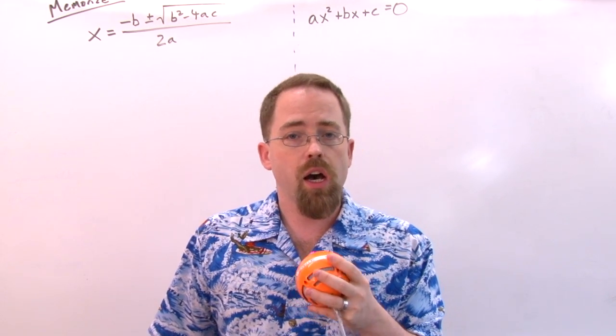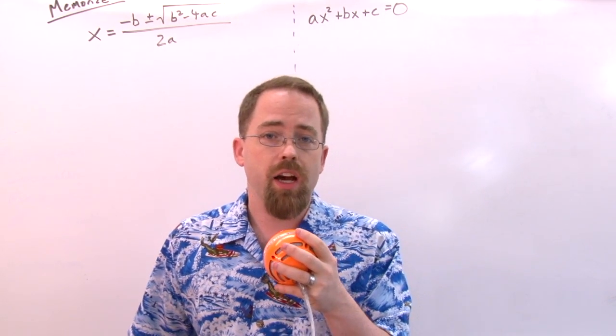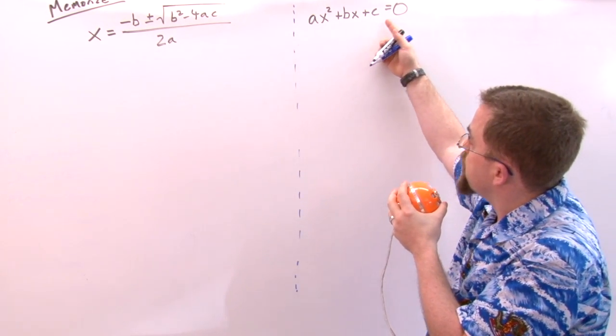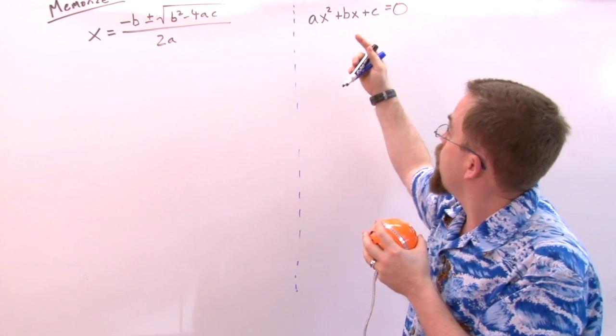I do want to demonstrate how you can re-derive it if you get stuck and forget it. What we're going to do is complete the square on ax² + bx + c = 0.